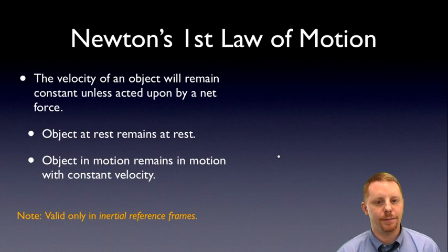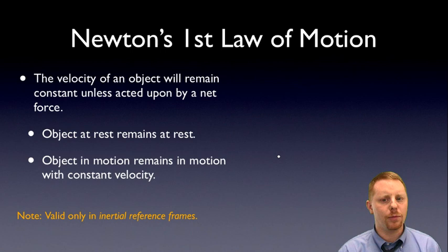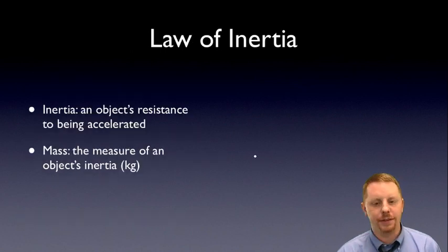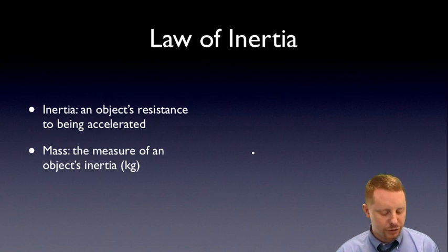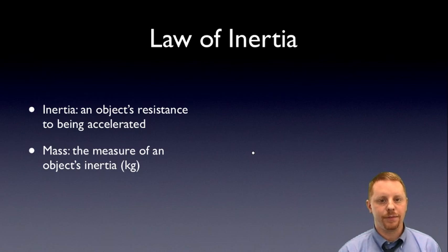Now it's important to note that Newton's laws of motion only hold in an inertial reference frame, which, for simplicity's sake, means we're in a non-accelerating frame of reference. You may have also heard this talked about as the law of inertia, where inertia is an object's resistance to being accelerated. More massive objects are harder to accelerate. They require more force to accelerate. So mass is a measure of an object's inertia, and we typically measure an object's inertial mass in kilograms as our base unit.